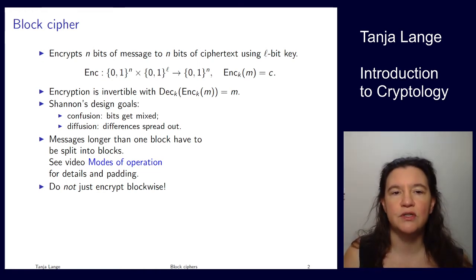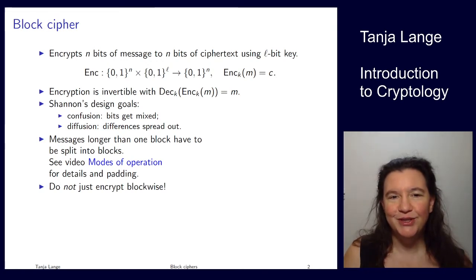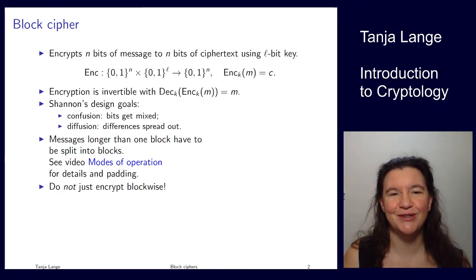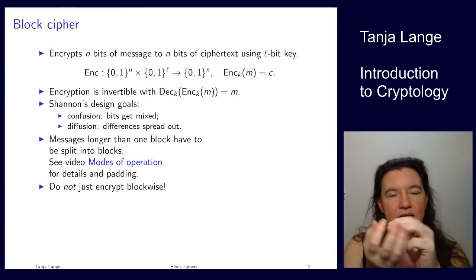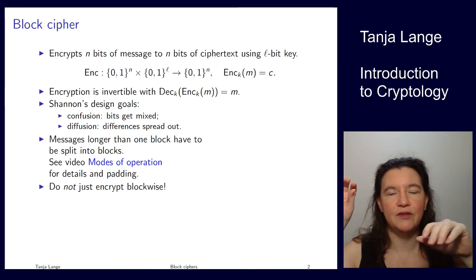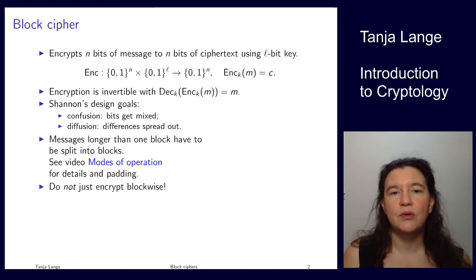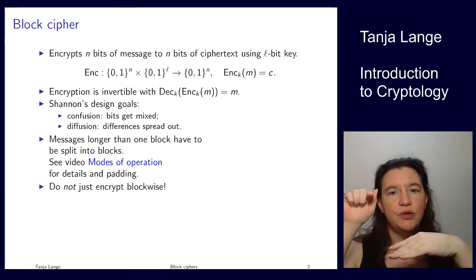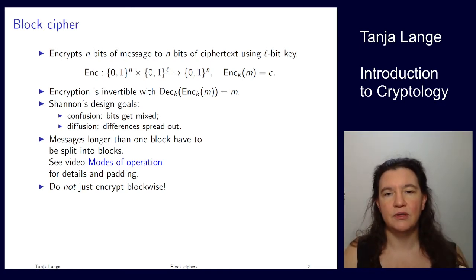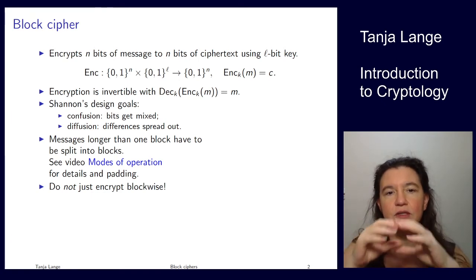Shannon in the 1940s developed two design goals for ciphers. He wanted confusion, meaning the bits that come in get mixed — bits on the left get moved to the right, from the right to the middle, and so on. And diffusion: if you have two input messages which only differ in one bit, their output ciphertext should be very, very different. So differences should spread out.